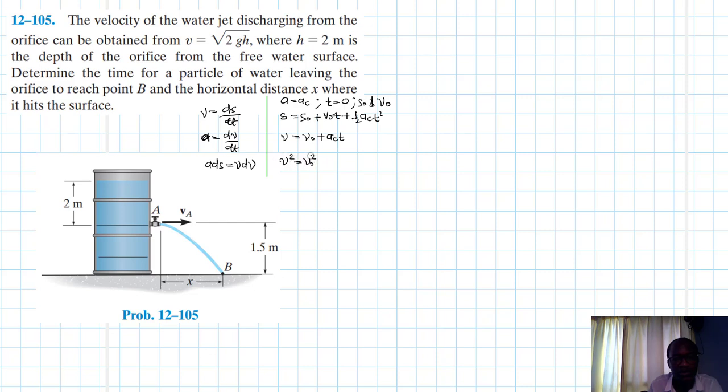v squared equals v naught squared plus 2ac times s minus s naught. Okay, so with these equations let's just write down what we have here. So here we only have the initial value here at A, which is va, which is in the horizontal direction.